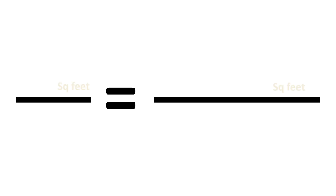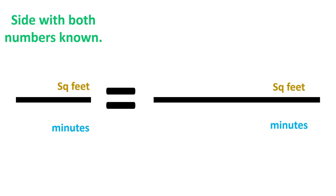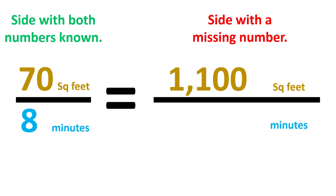To set up the cross-multiply and divide method, we write two division bars separated by an equal sign, then write in the units for each number. The top numbers must have the same units as each other, and the bottom numbers must have the same units as each other. The known numbers go on the left. We enter the area of the remaining walls and use X to represent the unknown — in this case, the time to paint the remaining walls. X always goes on the right side of the equal sign.